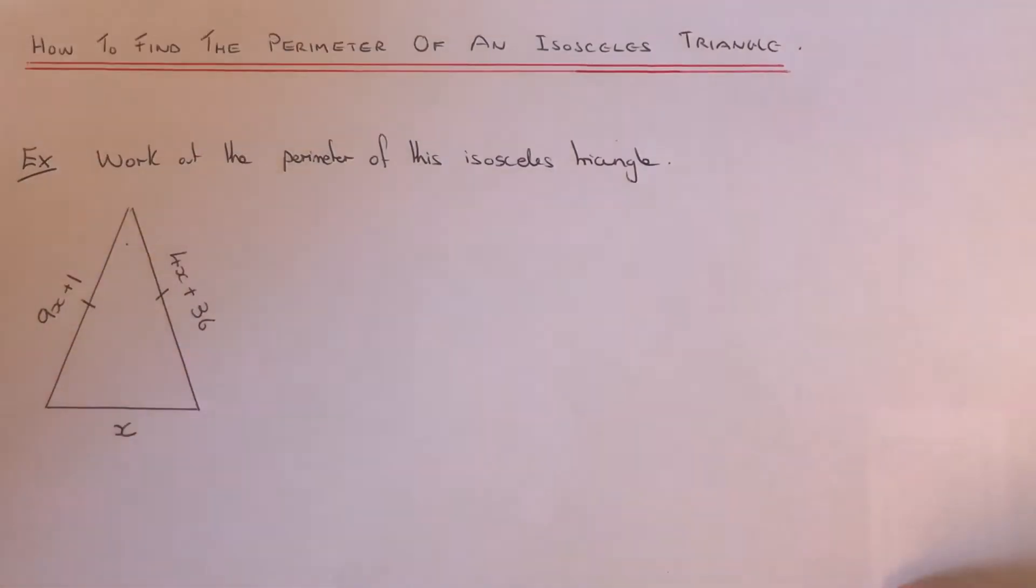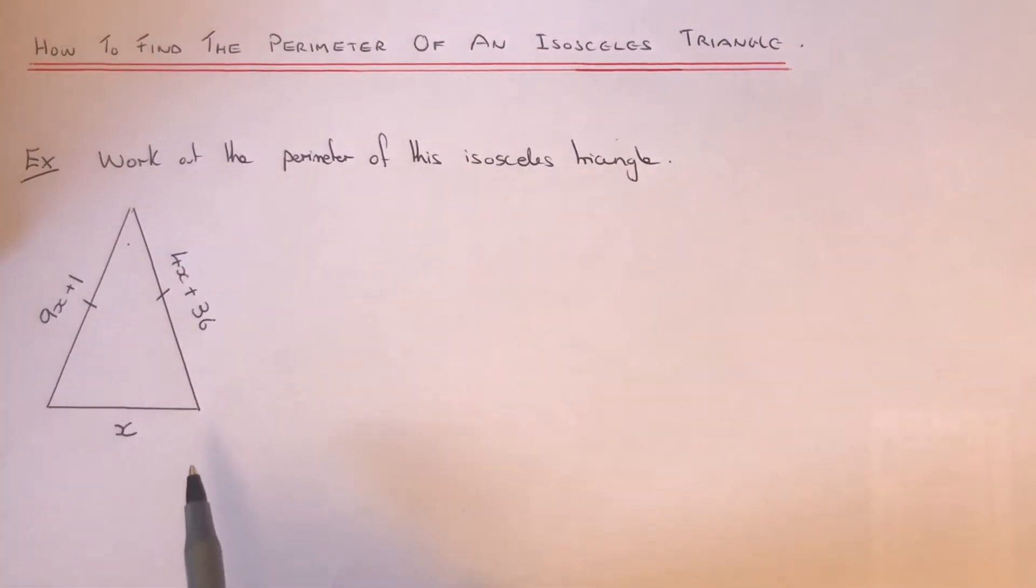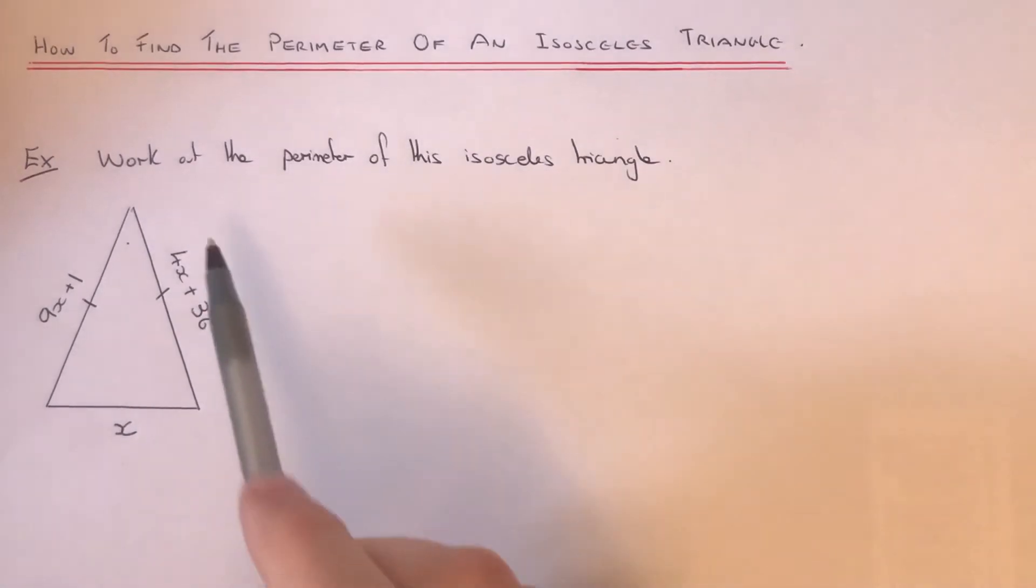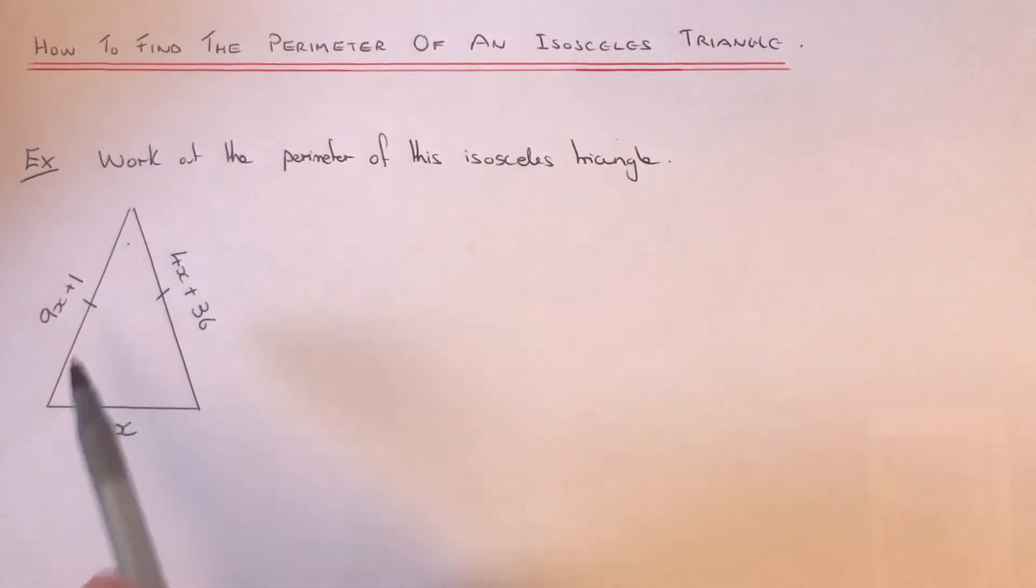Hi guys, welcome back. This is Maths3000. Today I'm going to show you how to work out the perimeter of an isosceles triangle if the side lengths are given in terms of x.